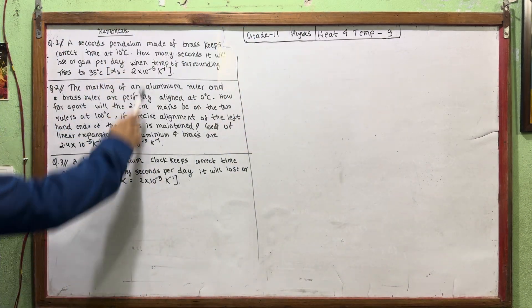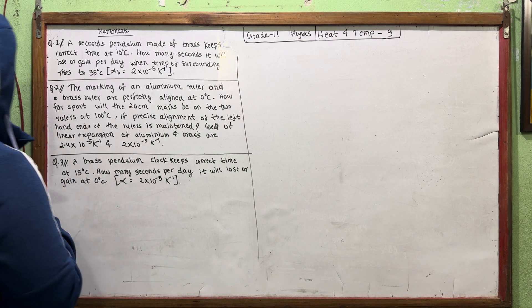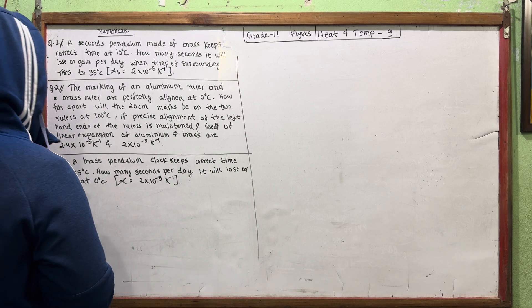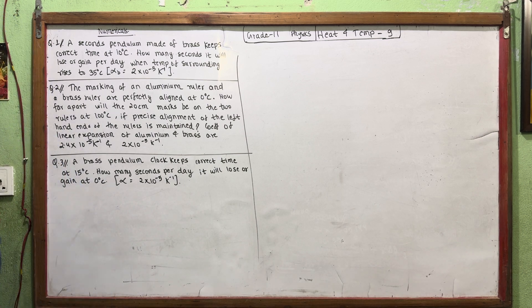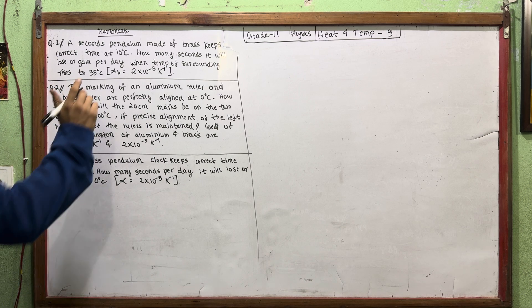A second pendulum made of brass gives correct time at 10 degrees Celsius. How many seconds will it lose or gain per day when the temperature of the surrounding rises to 35 degrees Celsius?